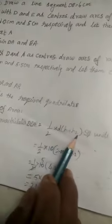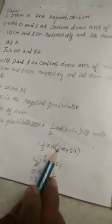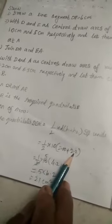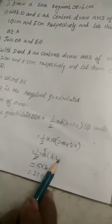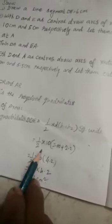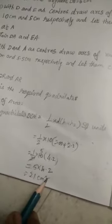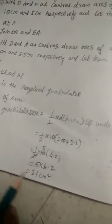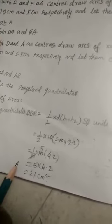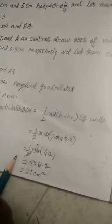Next area. Quadrilateral DEAR: half into D into H1 plus H2 square units. D means diagonal, apply the values. H1 is 2.2 centimeter, H2 is 2.2 centimeter. Half into D into H1 plus H2 square units. Half, D value is 10 centimeter, H1 is 2 centimeter plus H2 is 2.2 centimeter. Next you can add 2 and 2.2, that is 4.2. You simplify 2 and 5, so 5 into 4.2, you get 21 centimeter square. So draw neatly, first draw, next step write calculation, write neatly.